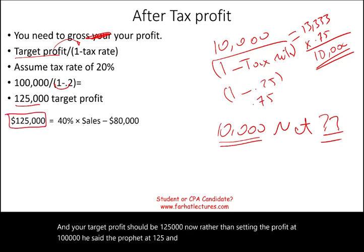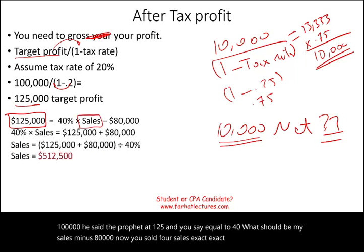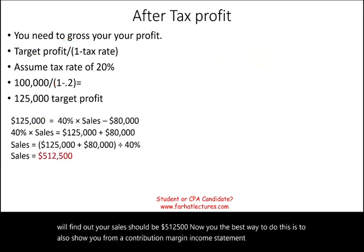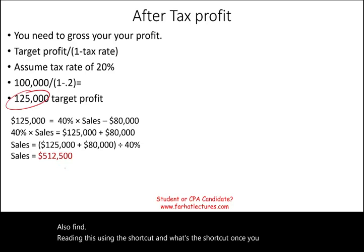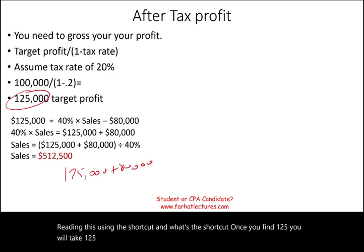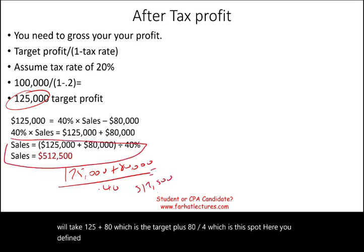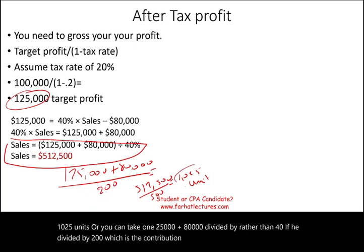Using the formula: $125,000 = 40% × Sales − $80,000. Solving gives sales of $512,500. Using the shortcut: ($125,000 + $80,000) ÷ 0.40 = $512,500. In units, that's $512,500 ÷ $500 = 1,025 units. Or equivalently, ($125,000 + $80,000) ÷ $200 contribution margin per unit = 1,025 units.